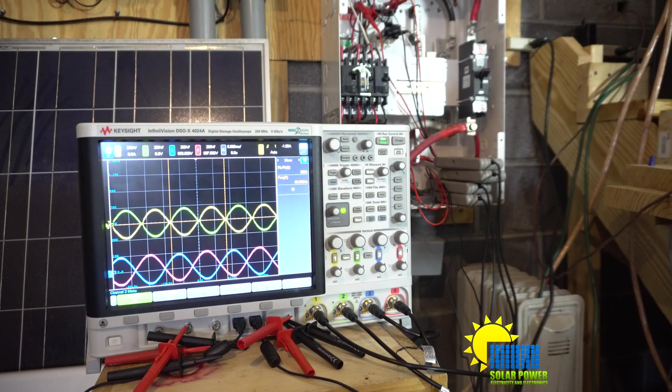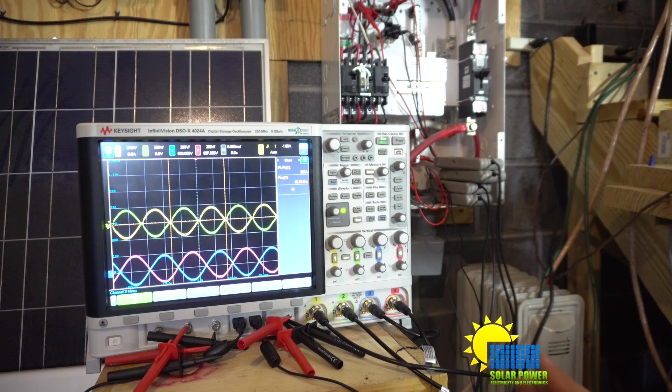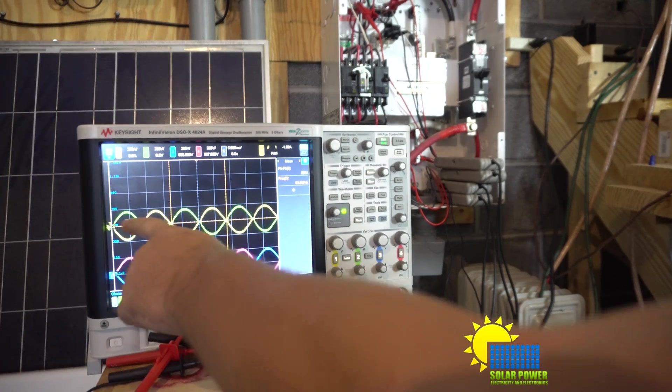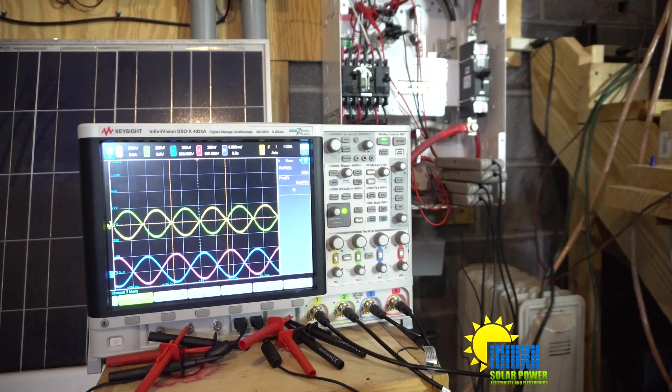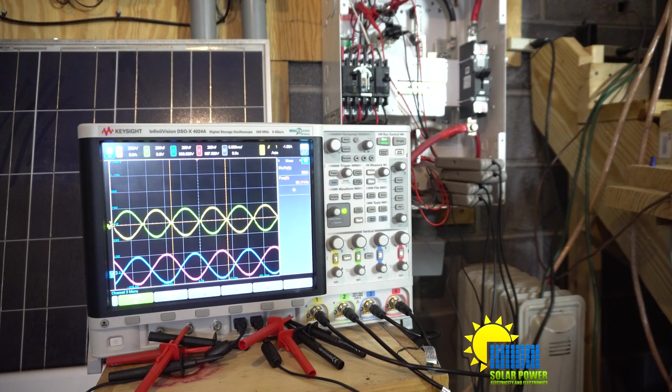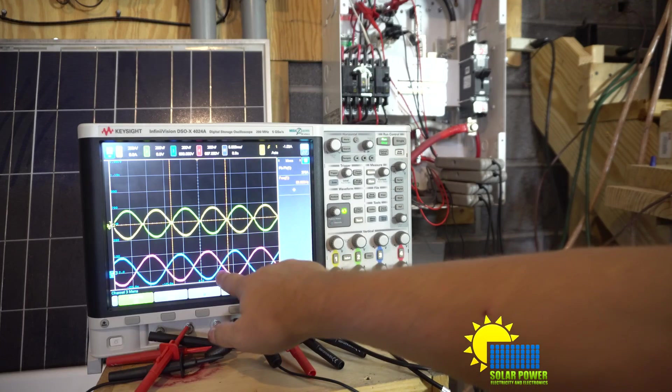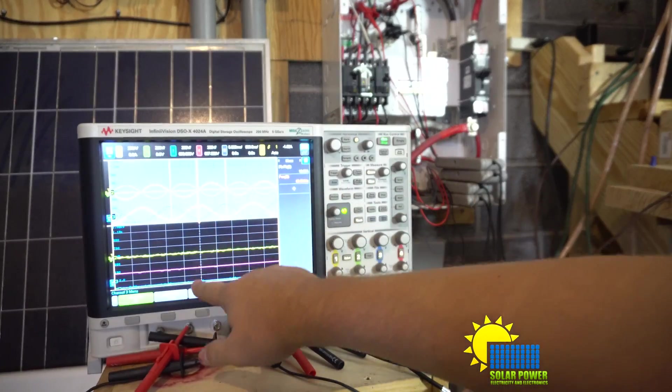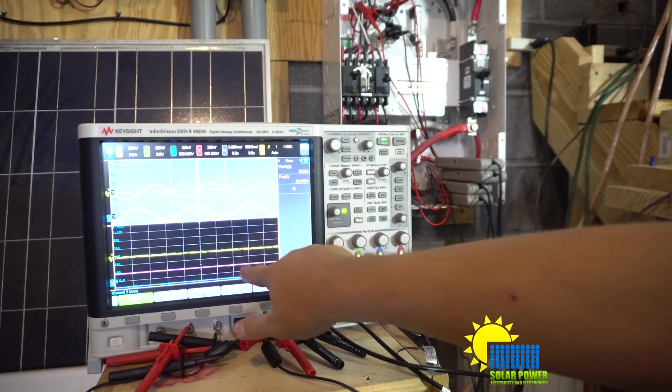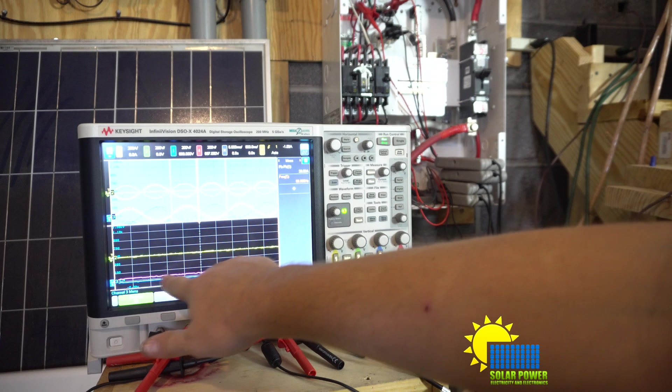What we have in front of us is two different sets of sine wave. This is the MagnaSine with 10 watt load on the green and yellow, and this is grid power. You can see why you can't attach a Magnum inverter to grid power and just send power back. You can see that the voltage is being offset.